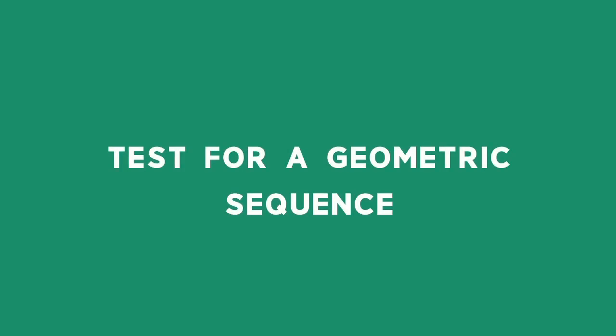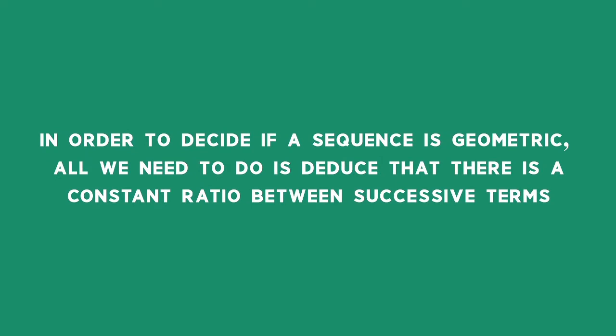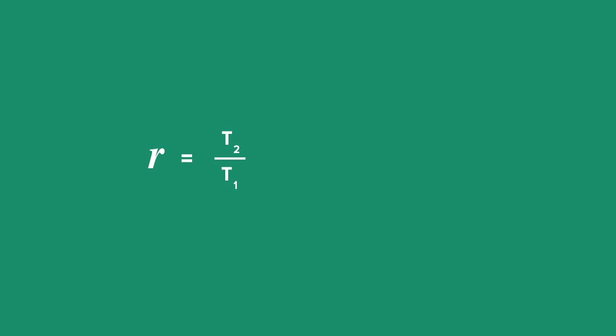Test for a Geometric Sequence. In order to decide if a sequence is geometric, all we need to do is deduce that there is a constant ratio between successive terms. r is equal to term 2 divided by term 1, or term 3 divided by term 2, and so on. In general, r is equal to term n divided by term n minus 1. If this condition does not hold, then the sequence is not a geometric sequence.